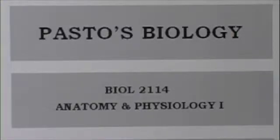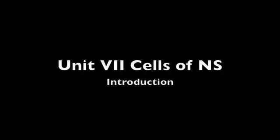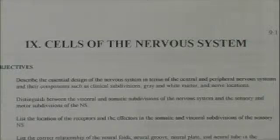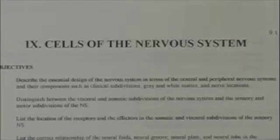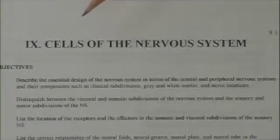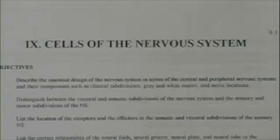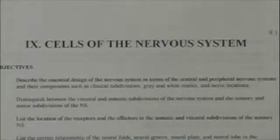This is Pasto's biology, covering topics from the study guide. Let's begin the last major unit of ANP-1. This unit deals with the nervous system, and because of its complexity, I've divided it into two parts. Chapter 9 of your manual is called Cells of the Nervous System. It mainly deals with the neuron and what it does, although there's quite a bit of introduction to it.